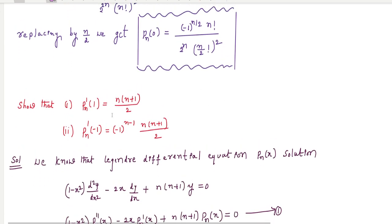The next property is to show that P_n'(1) = n(n+1)/2, and the second important property P_n'(-1) = (-1)^(n-1) · n(n+1)/2. All these properties are very, very important.